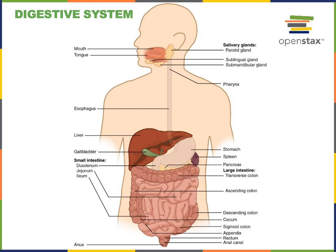The GI tract extends all the way from the mouth to the anus and is divided into several regions. The mouth is important for initiating the digestion process. When food is brought into the mouth, that's known as ingestion. And then as you start to chew food up, that's known as mastication.